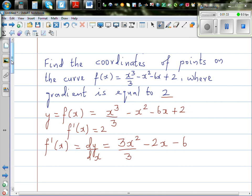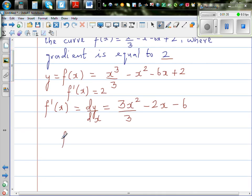So we can say, f dash x is equal to, so 3 and 3 gets cancelled, you've got x squared, minus 2x, minus 6.